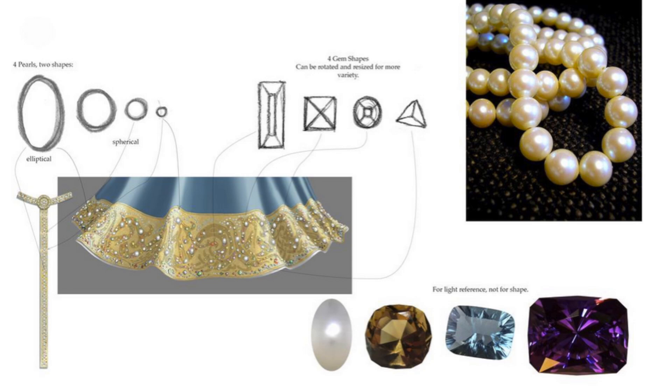For every object in a Pixar movie, there's a shader packet. The shader packet describes, in visual detail, everything about a surface. It will include photographs of what something looks like in real life, drawings describing maybe the way the roughness on a surface looks, or how someone's hair should look.